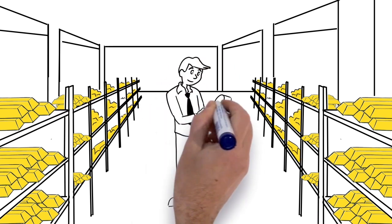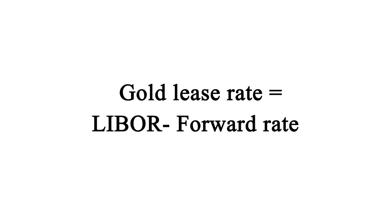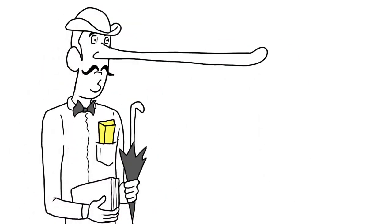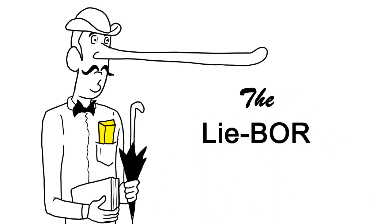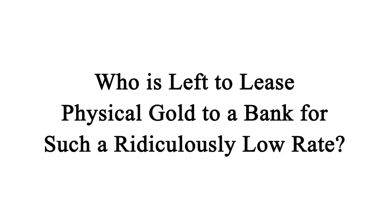When leasing gold, the rate is determined by the gold lease rate. And this rate is extremely low, being based on LIBOR. And we now know with the LIBOR scandal that it has been manipulated to the downside. And we now see the scope of that scandal when we relate it to the gold price manipulation. Who has left to lease physical gold to a bank for such a ridiculously low rate?